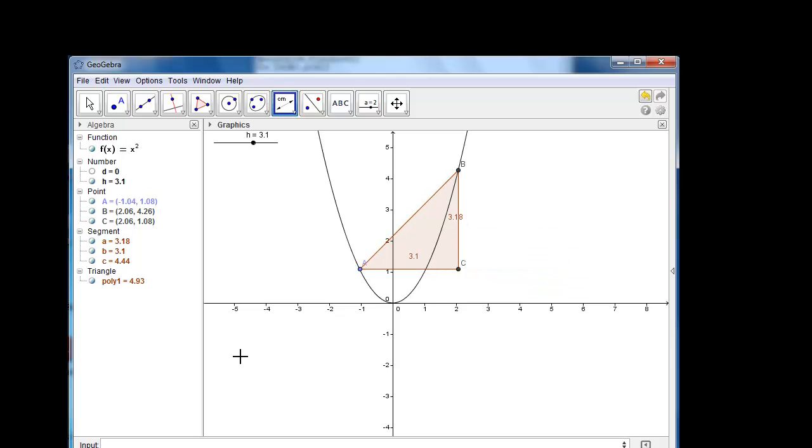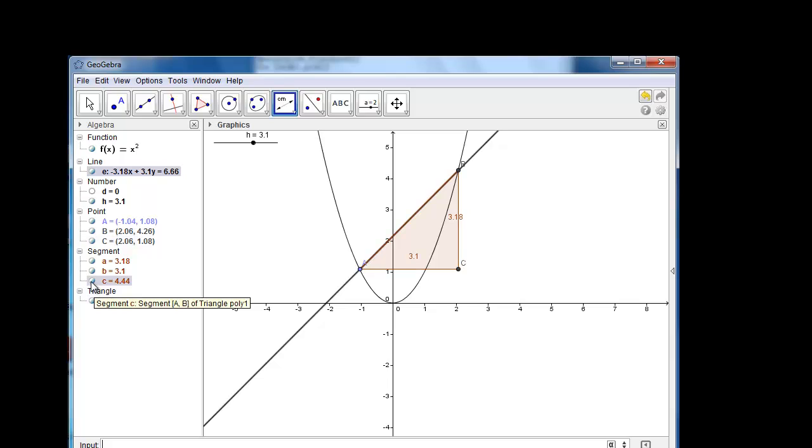Step number seven, create line AB in the input box. Type the word line square brackets A comma B to create our secant line that travels through A and B. It's getting a little crowded here now between A and B. We can hide the segment C which is opposite point C by selecting the little circle and deselecting it. Now it's a little clearer.